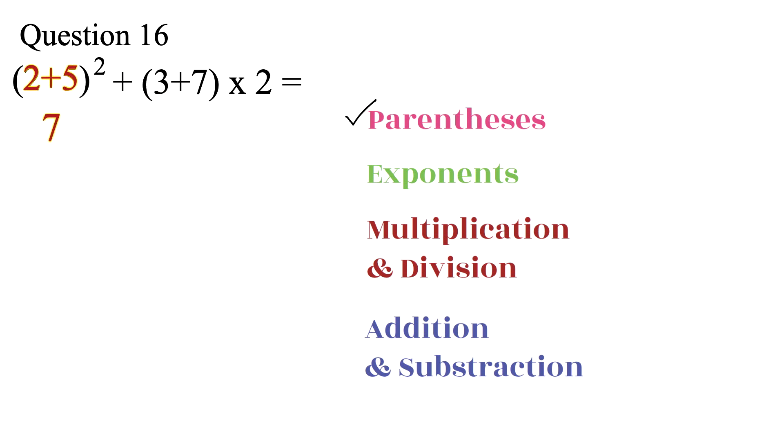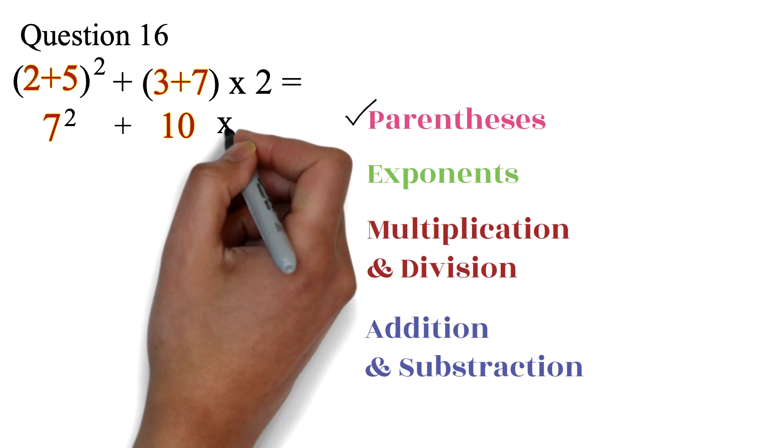We have 7, exponent 2, plus, we do 3 plus 7, to get 10. Then, times 2.